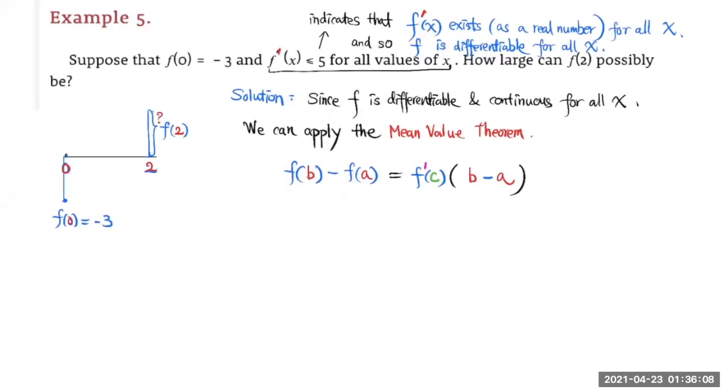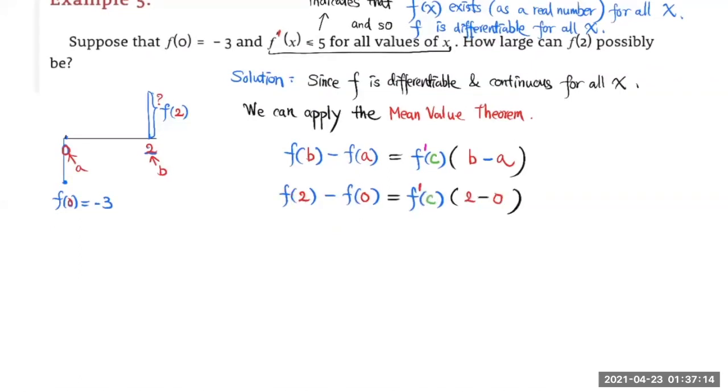In this case, we have a = 0 and b = 2. And we have f(2) - f(0) = f'(c) × (2 - 0), where c over here is a number between 0 and 2.